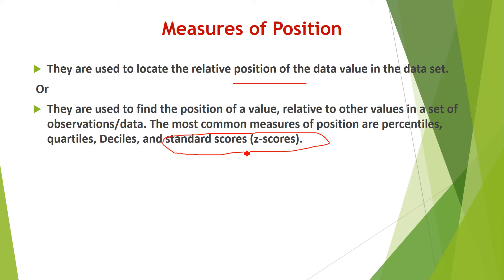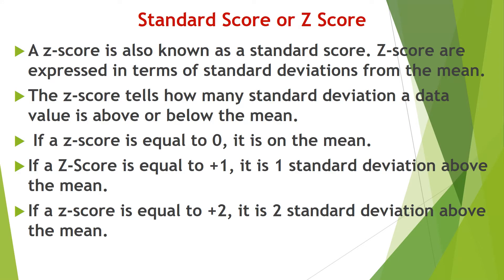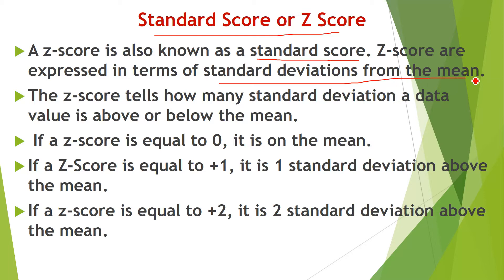In this lesson I will explain standard scores, one of the most important measures of position. In the next lesson we will discuss percentiles, quartiles, and deciles. A Z score is also known as the standard score — both terms refer to the same thing. Z scores are expressed in terms of standard deviations from the mean.